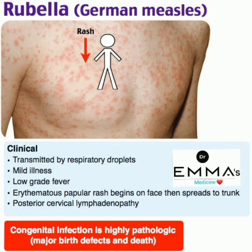I am again repeating how rubella or German measles patients present. It is transmitted by respiratory droplets, then a mild illness develops with low-grade fever. There is an erythematous papular rash beginning on the face then spreading to the trunk, and posterior cervical lymphadenopathy.